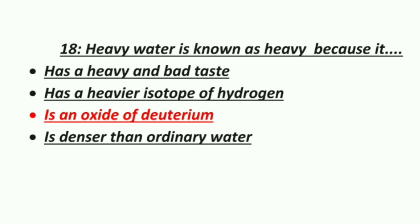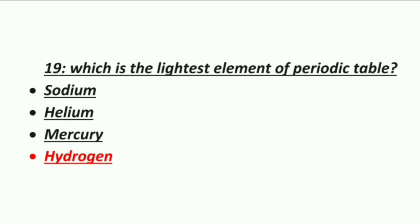Eighteenth MCQ: heavy water is known as heavy because — Option 1: it has a heavy taste, Option 2: it has a heavier isotope of hydrogen, Option 3: it is an oxide of deuterium, Option 4: it is denser than ordinary water. The correct answer is it is an oxide of deuterium.